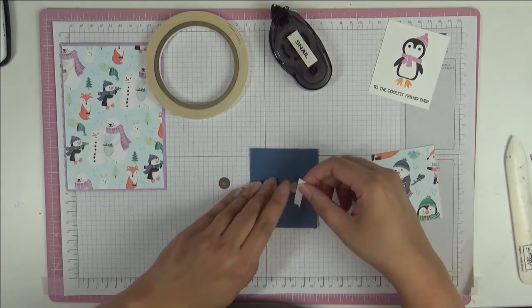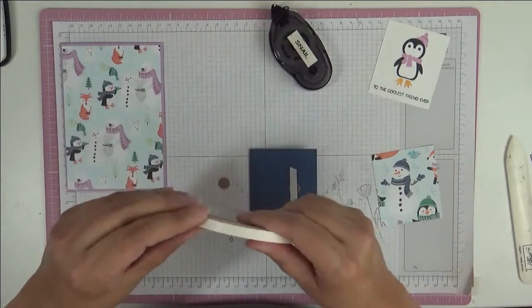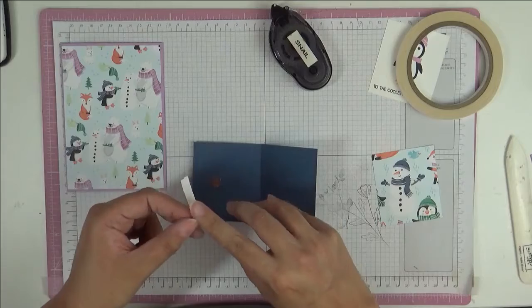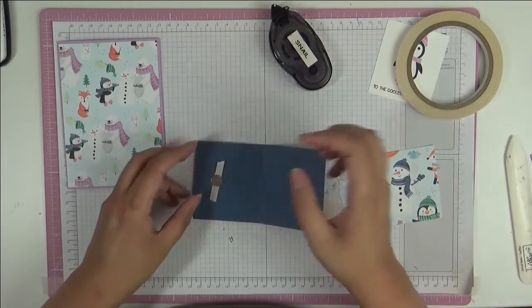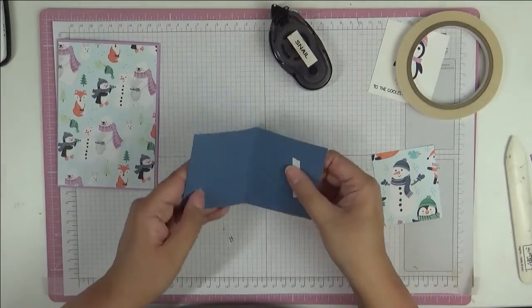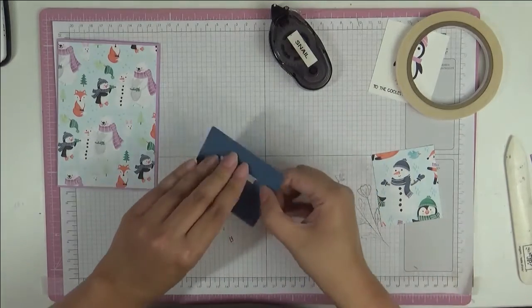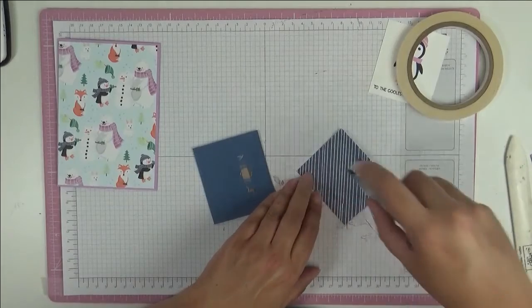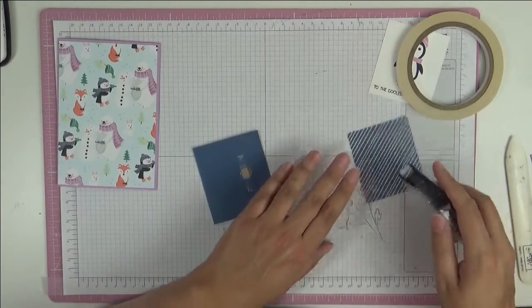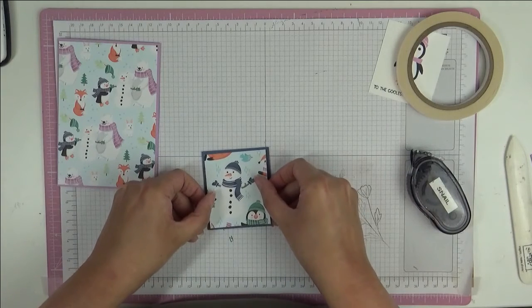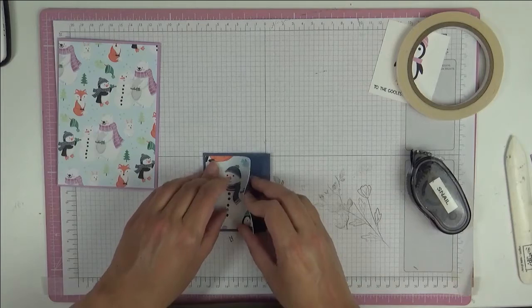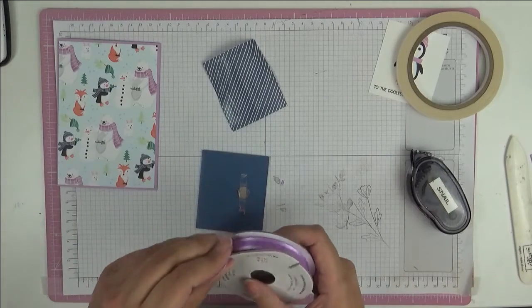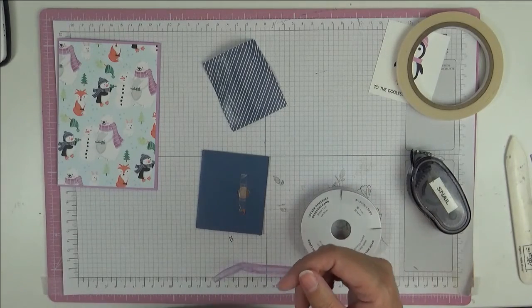I'm just going to use some tear and tape here, and I'll put my first magnet on the front where I think I want it. The next one's going to get hidden behind our stamped image. Press down like that. Now we know everything's going to be in the right place. Now we're going to put down our designer series paper on top like this to hide our magnet.